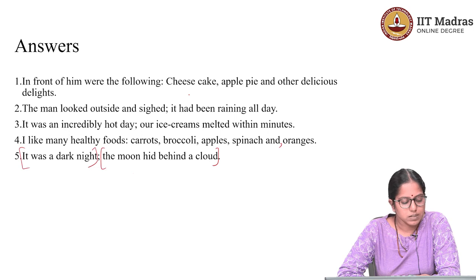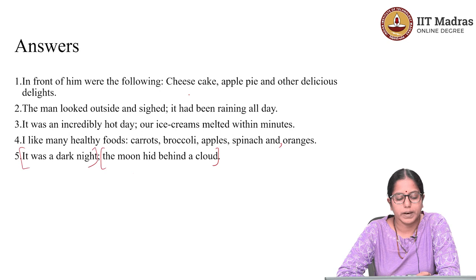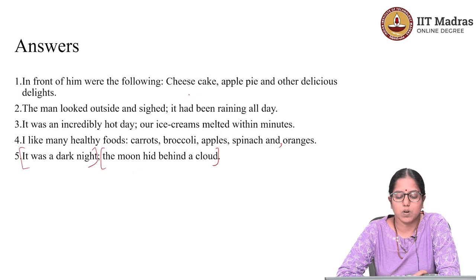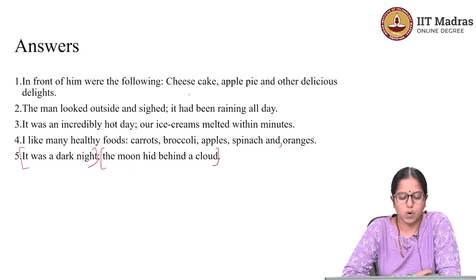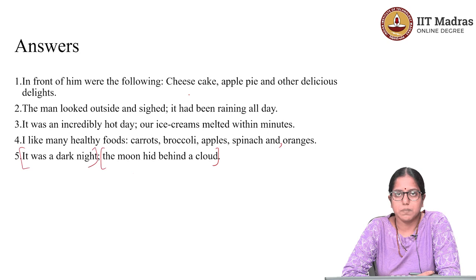The second sentence: 'The man looked outside and sighed; it has been raining all day.' Here you see a semicolon because these are two independent clauses — 'the man looked outside and sighed' and 'it had been raining all day.' When you connect two independent clauses using a semicolon, you do not use conjunctions. The third sentence: 'It was an incredibly hot day; our ice creams melted within minutes.' Again, two independent clauses — same explanation as the second sentence.